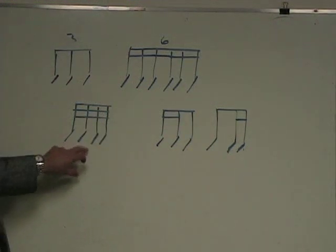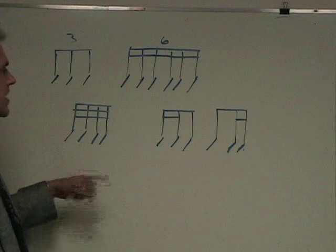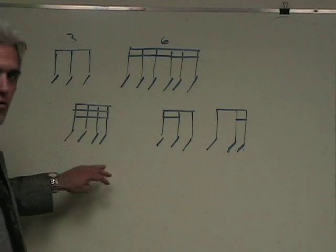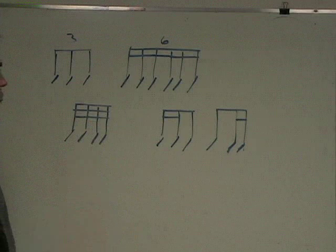And then 32nd notes. Usually played as rolled. Usually you're double stroking 32nd notes. Not always, but a lot of times you are. When you see something notated in a 32nd note, it means to do a little roll there.